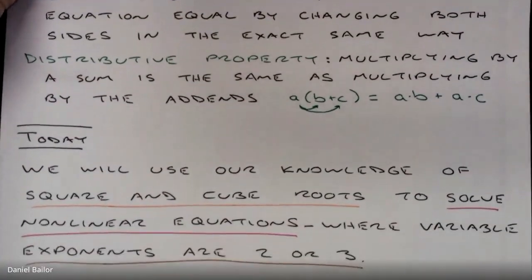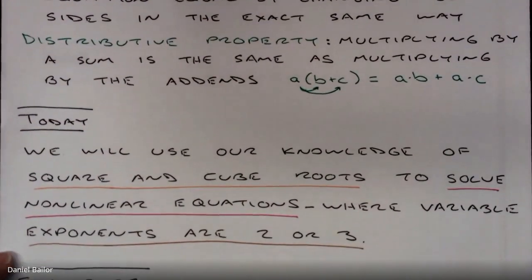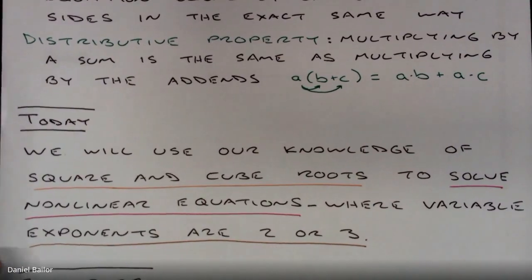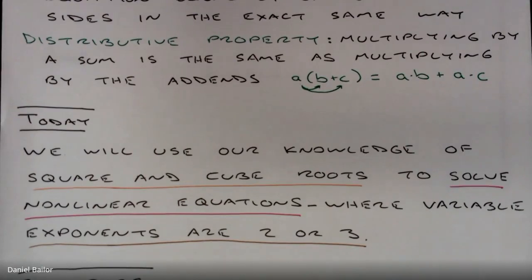Today we will use our knowledge of square and cube roots — from Lessons 2, 3, and 4 — to solve nonlinear equations. Remember, nonlinear equations are when the exponent on variables will be 2 or 3, or anything except 0 or 1. Linear equations have a 0 or 1 exponent; nonlinear have other things. Throughout this year we've been solving linear equations, but today we start with nonlinear equations where variables have different exponents.